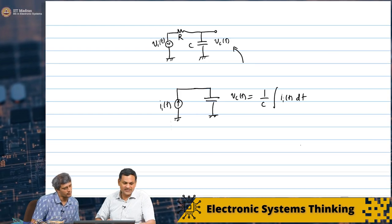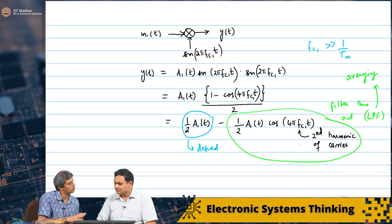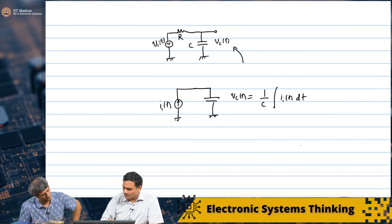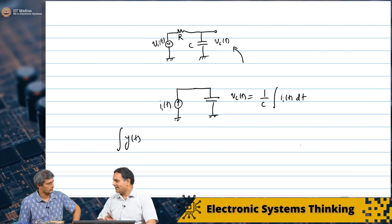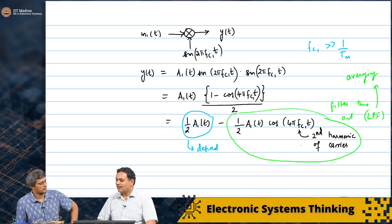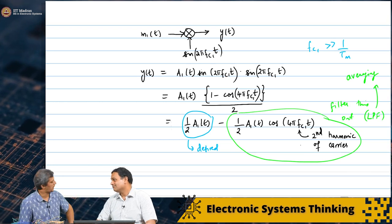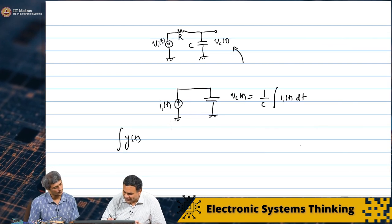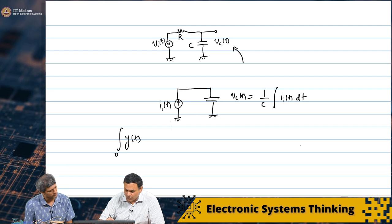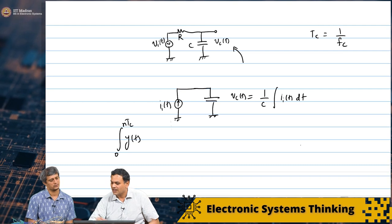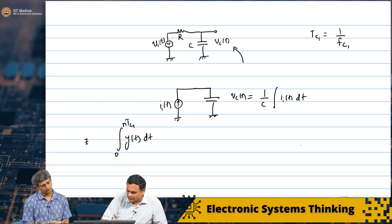Now, if I take Y of t and just do this integration, you are saying this second term will go to zero. To prove that, take Y of t, integrate it, and choose an integration period that is a multiple of the time period of the carrier — so we get a whole number of periods. Let us say we start integrating at some time and stop at n times tc1. We will say tc1 is 1 over fc1, so n times tc1. If you do this — let us call this z of t — you are integrating a combination of half A1 of t.